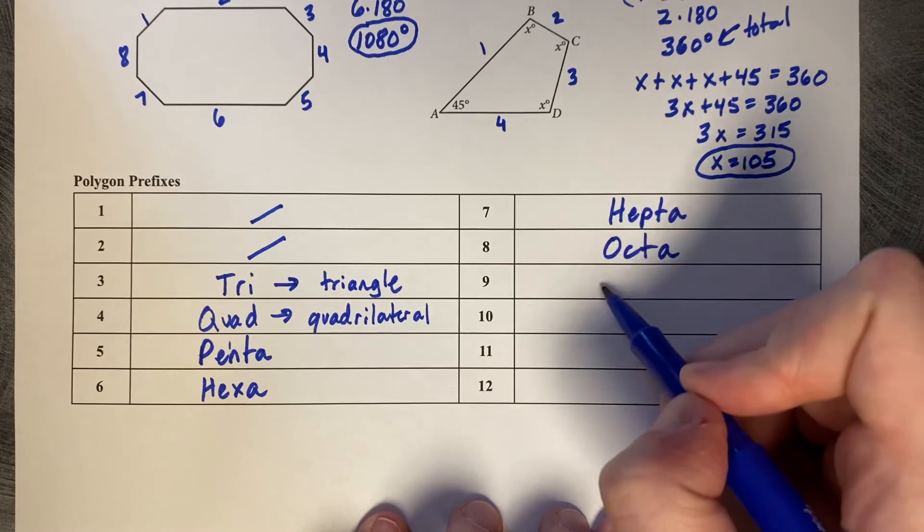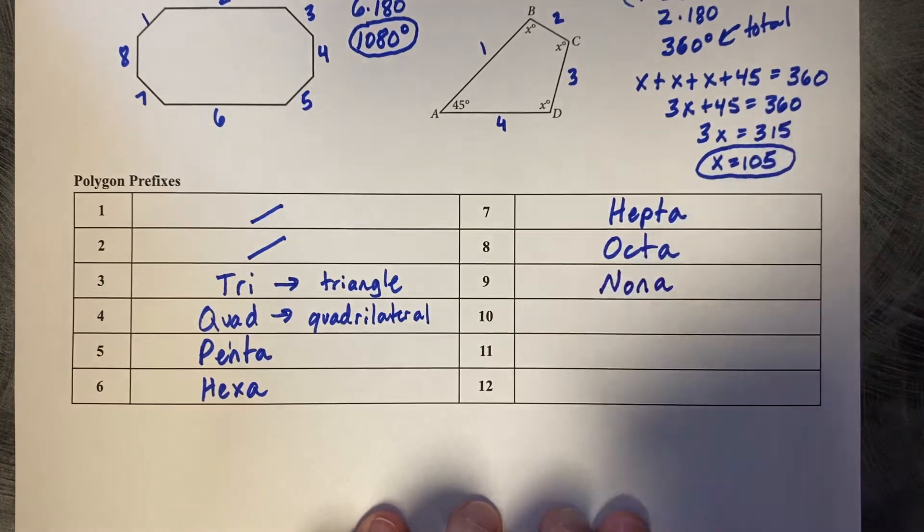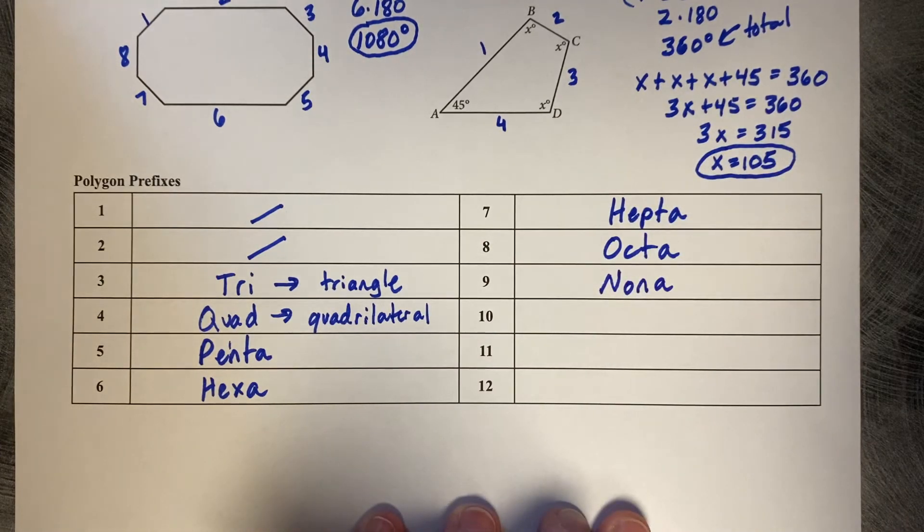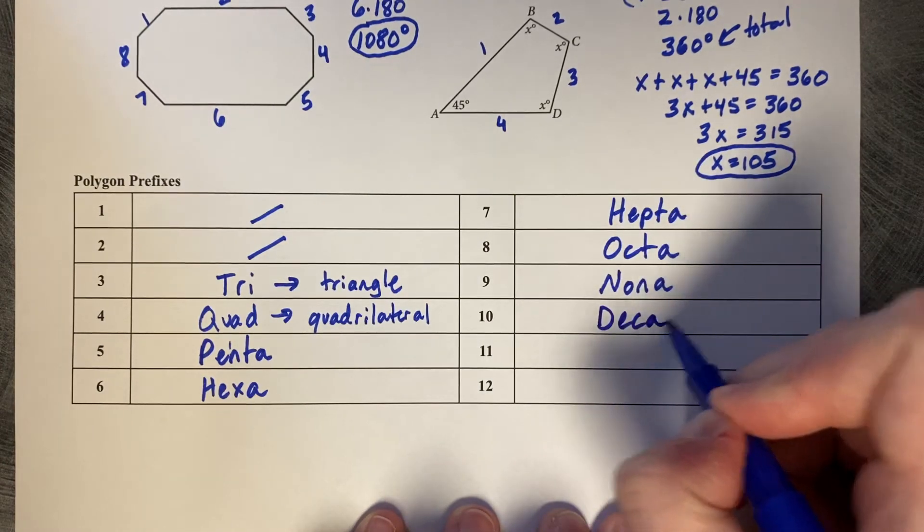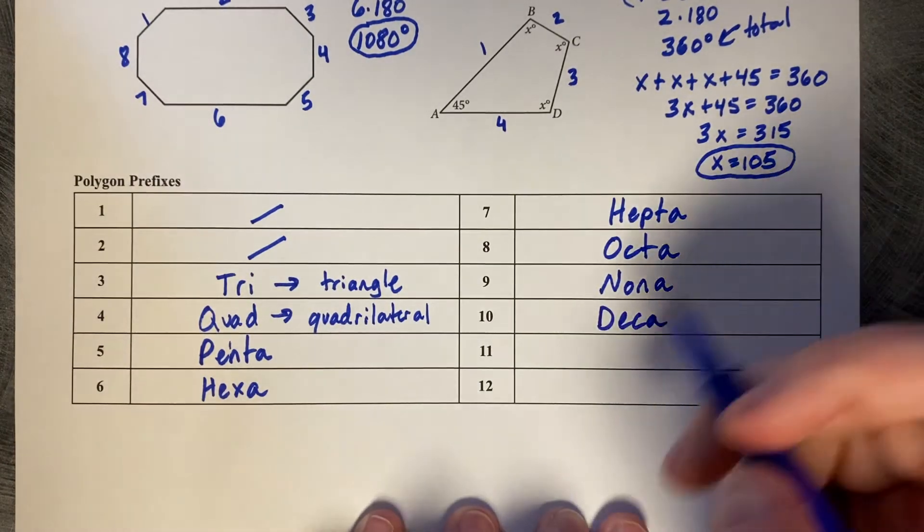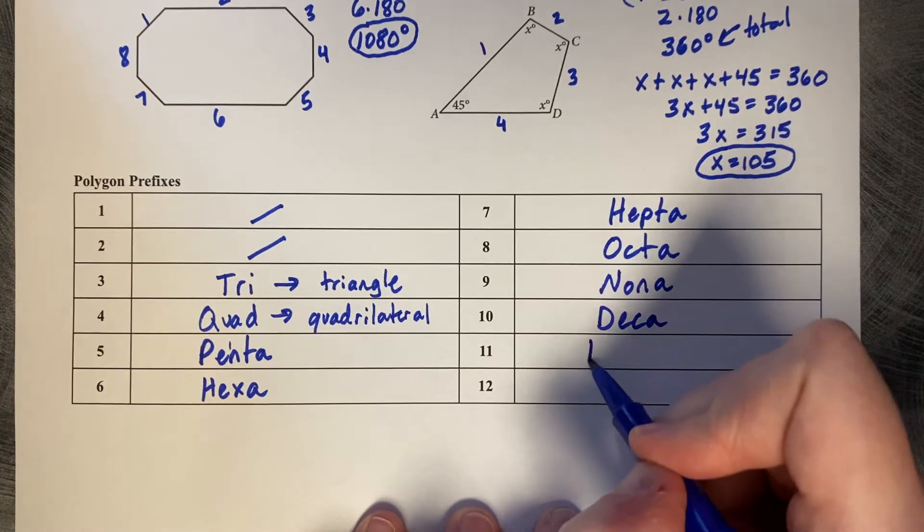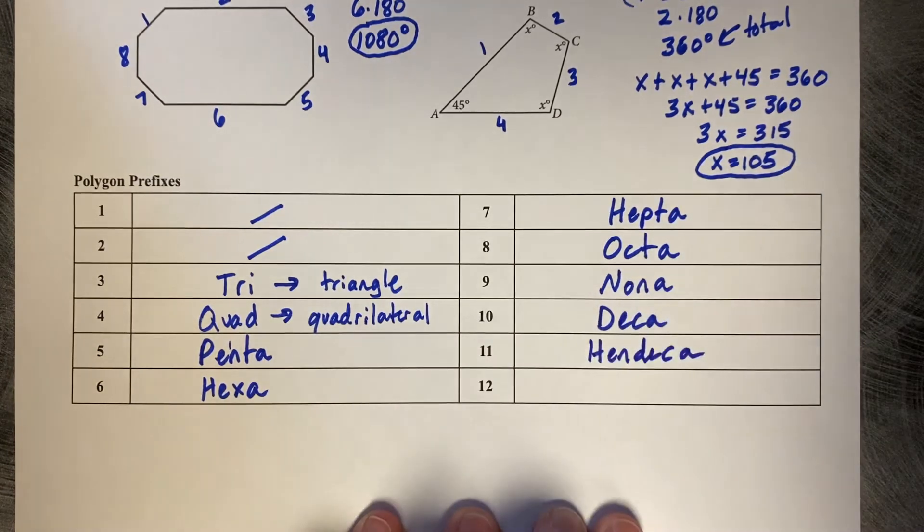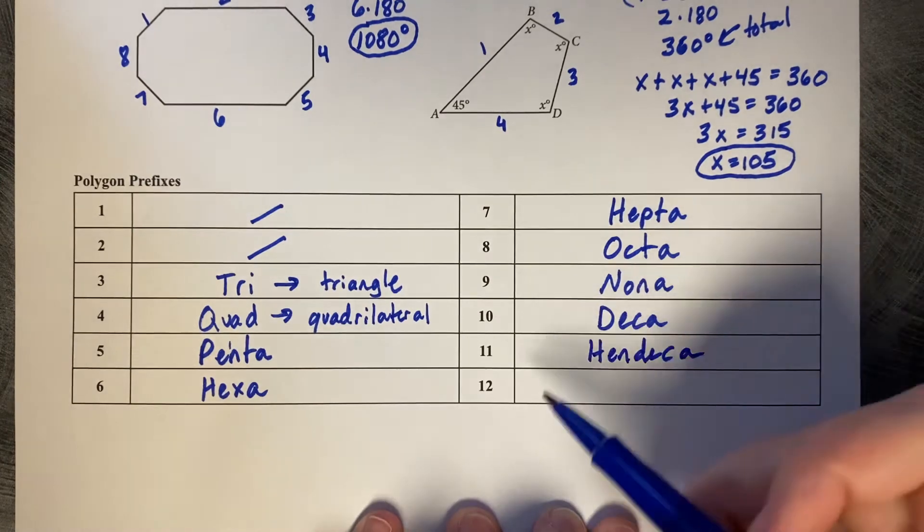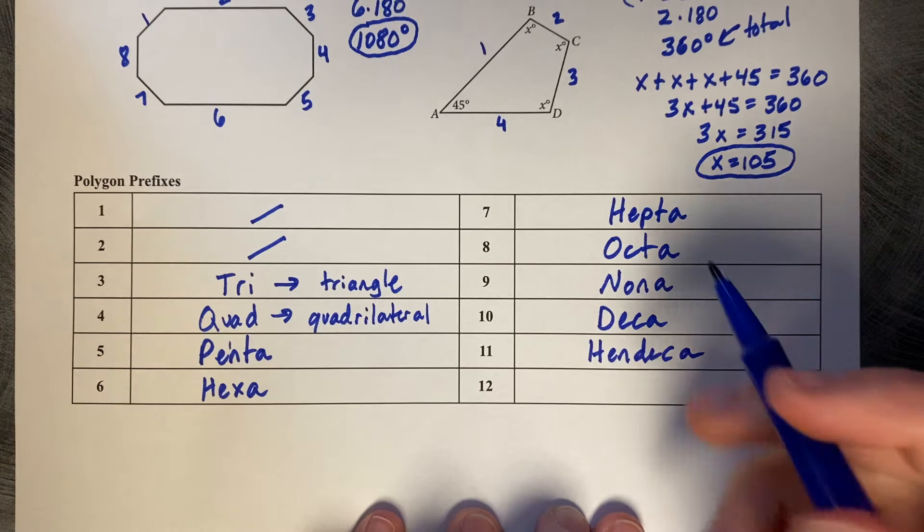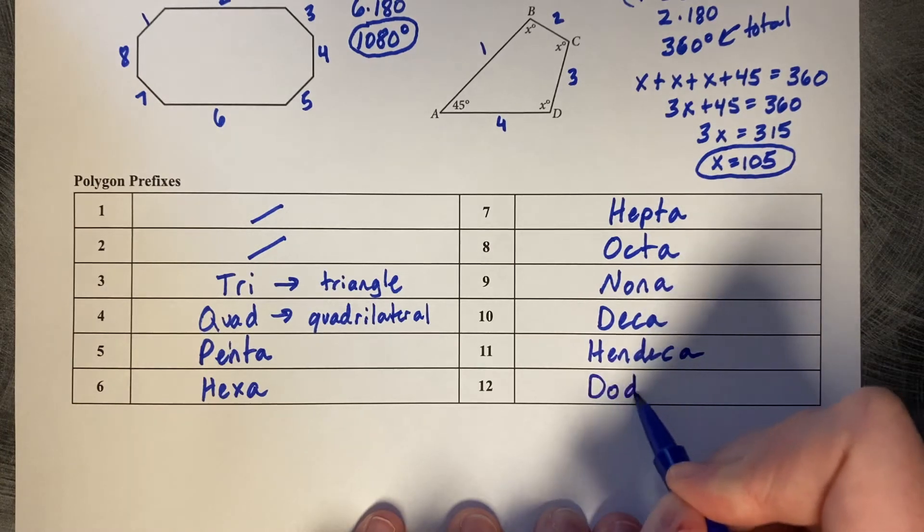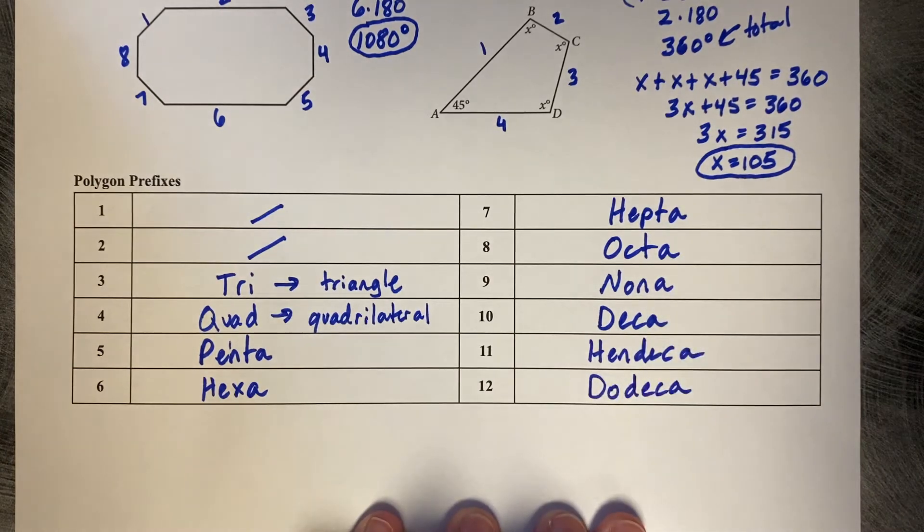Nine is nona, a nonagon. Ten-sided figure is a decagon. Eleven-sided figure is called a hen-deca, hen-decagon. And twelve, my very favorite word of almost all of math, do-deca, a do-decagon.